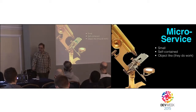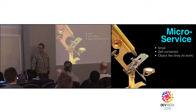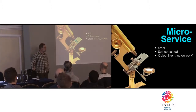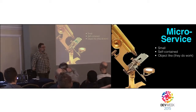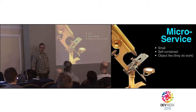Microservices are small, self-contained, and they hide things. One of the most important characteristics of an object, if done right, is that it hides the implementation details. I have a rule of thumb that you should be able to completely replace the implementation of an object with a different implementation and the clients of that object shouldn't know. That rule applies in spades to microservices.